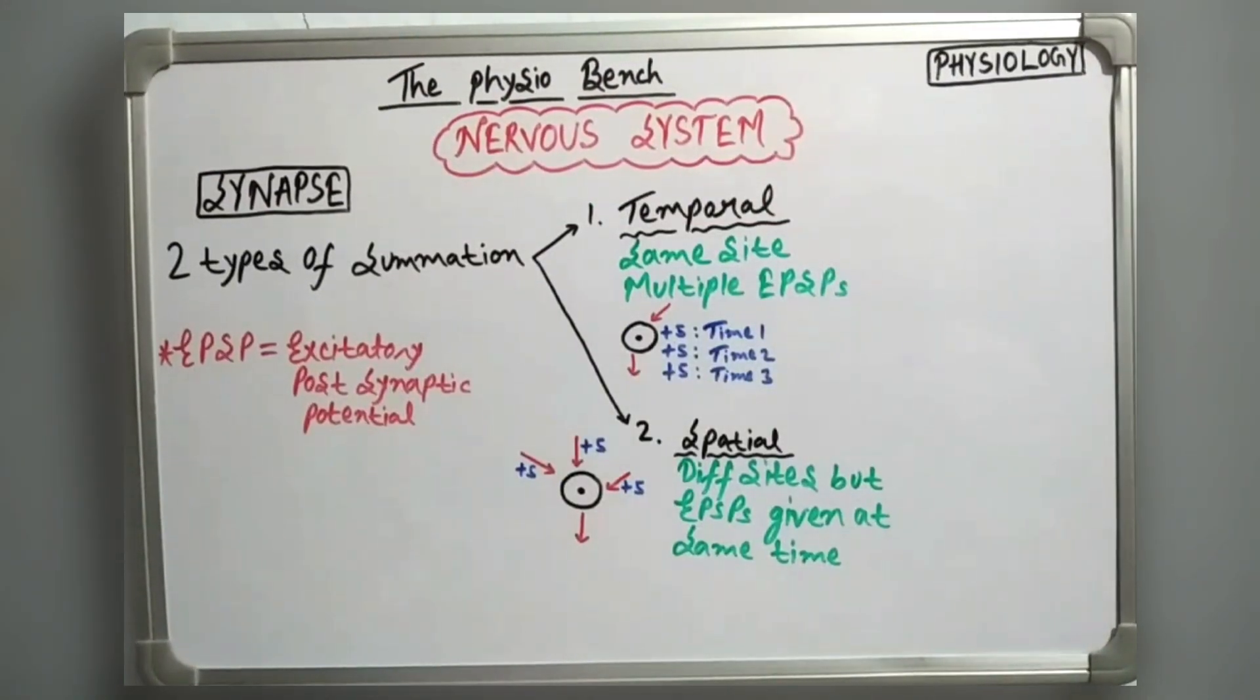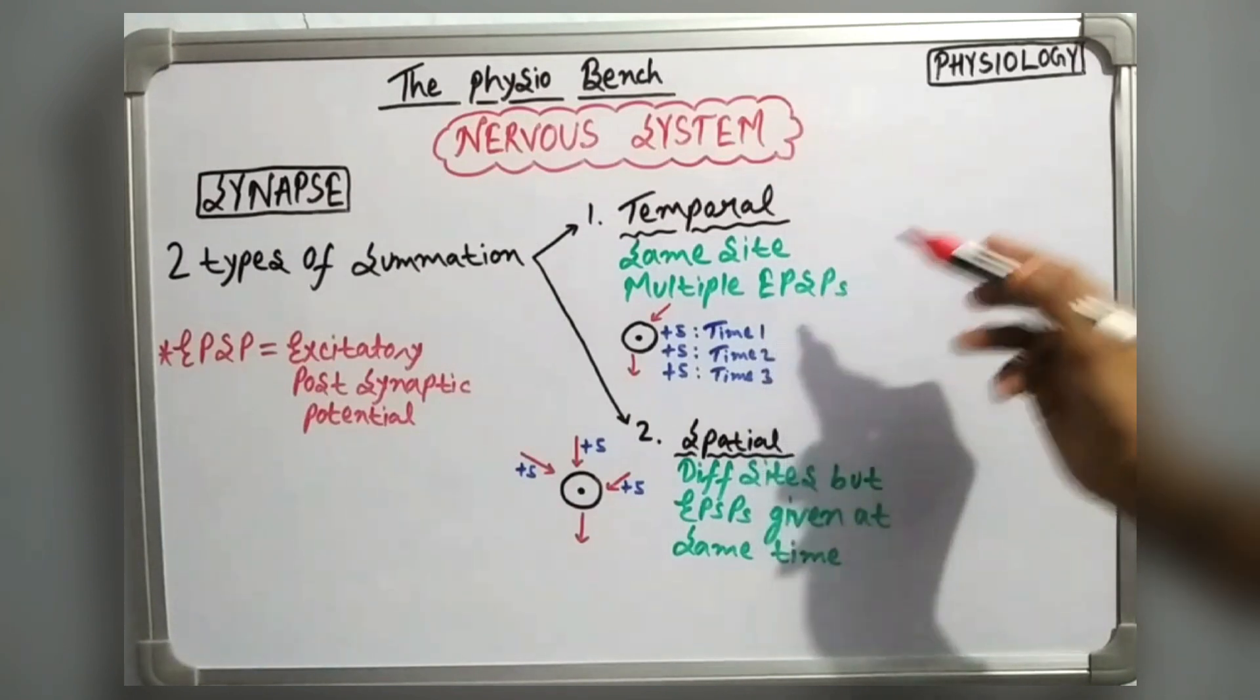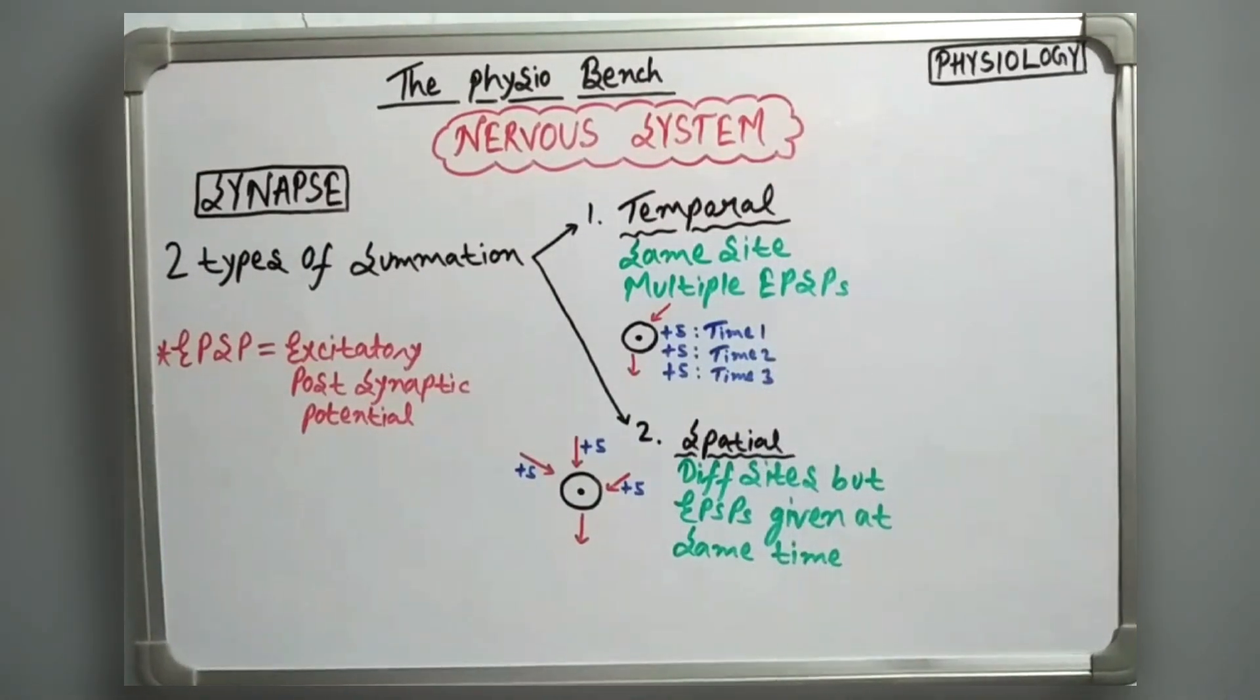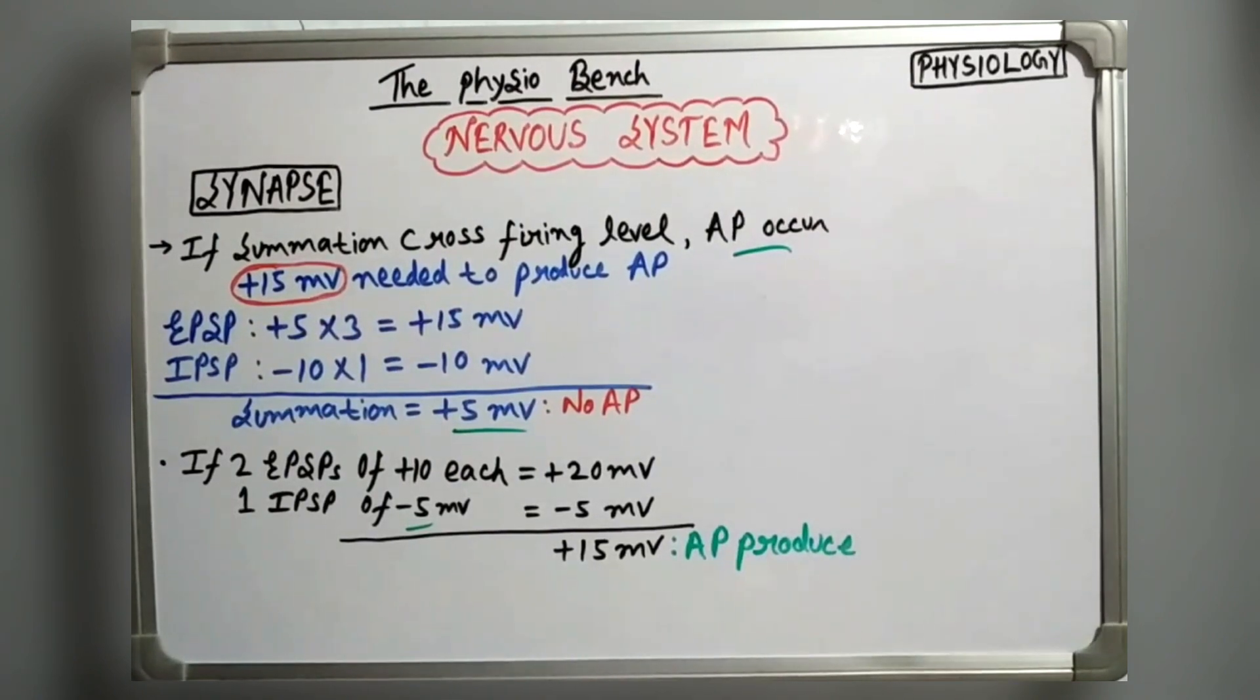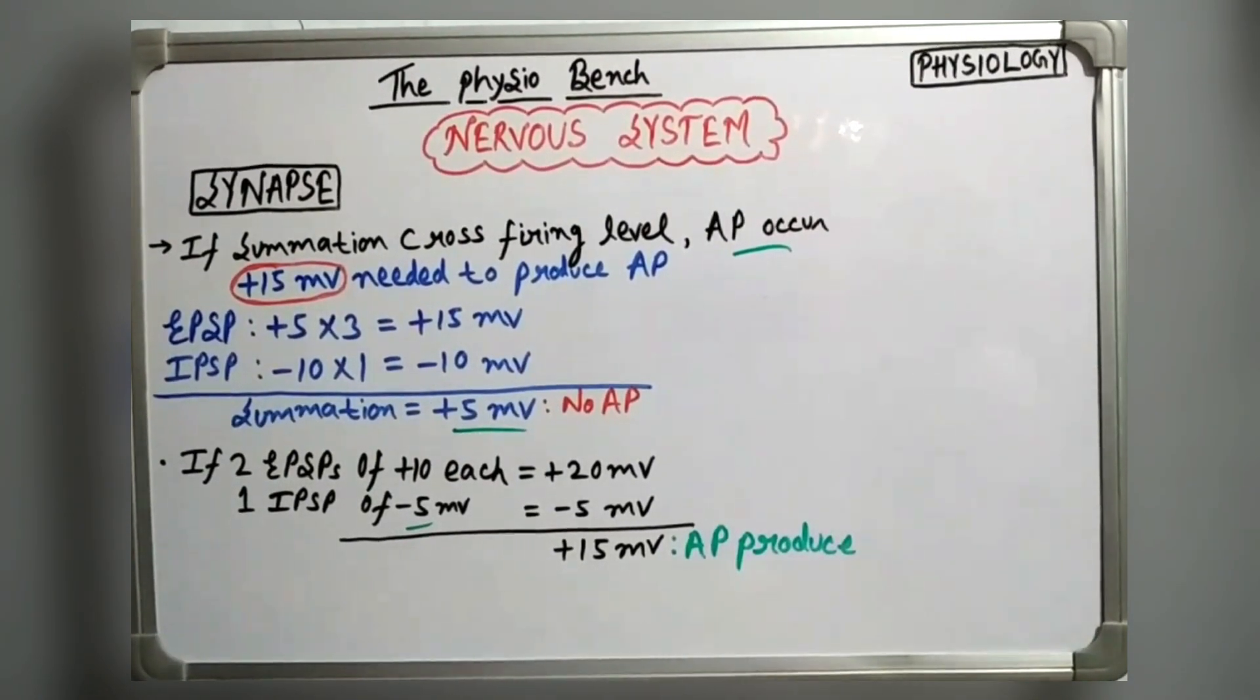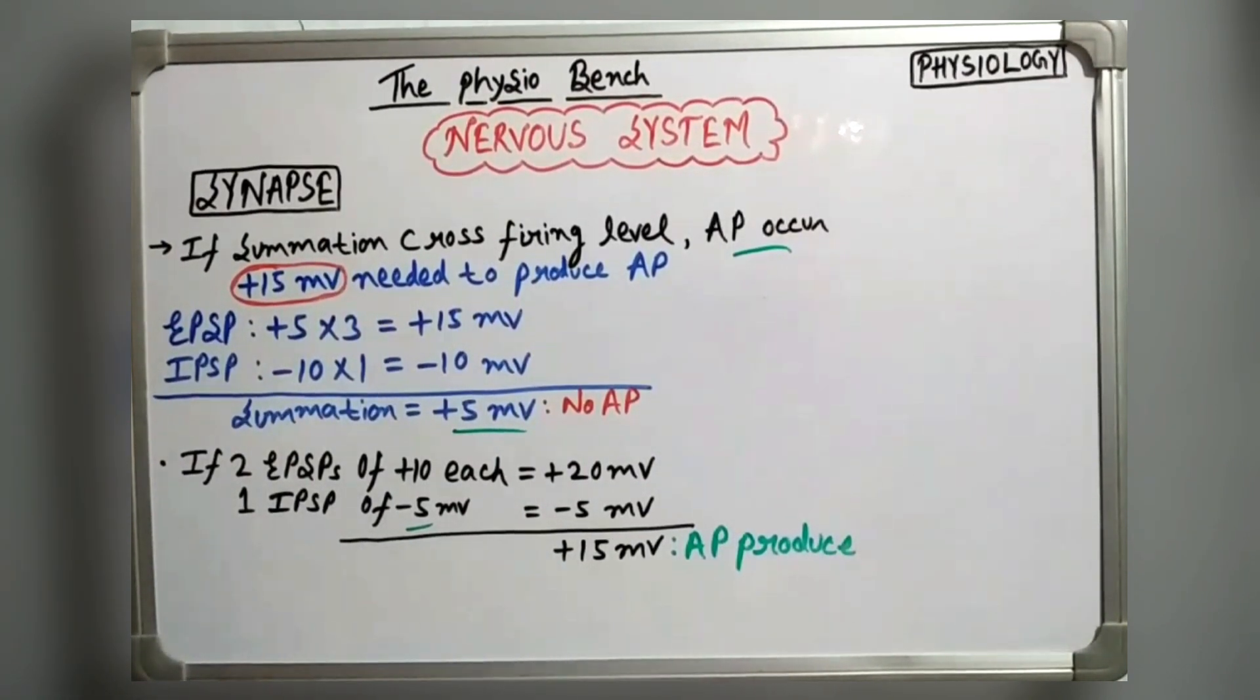There are two types of summations - temporal and spatial. Temporal means we give multiple EPSPs from the same side at different times. Spatial means at the same time we give EPSPs from different locations, which can produce an action potential if it reaches plus 15 mV.